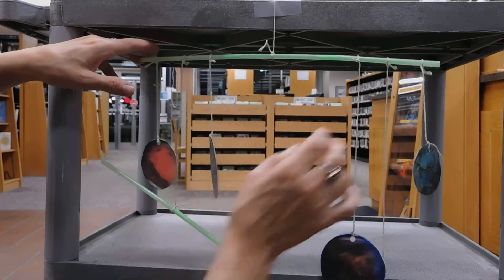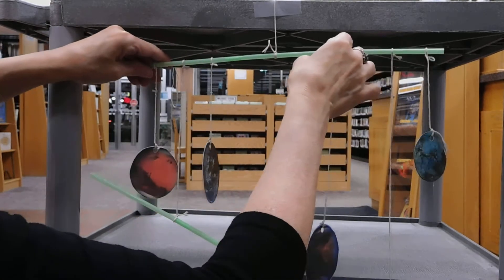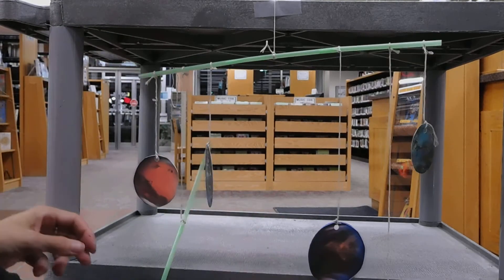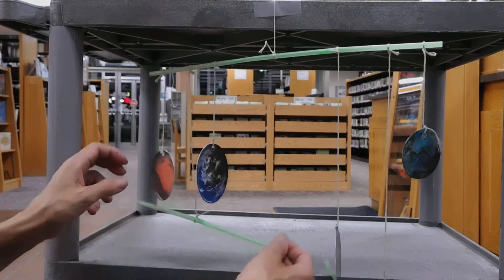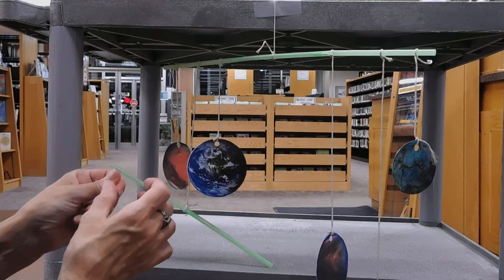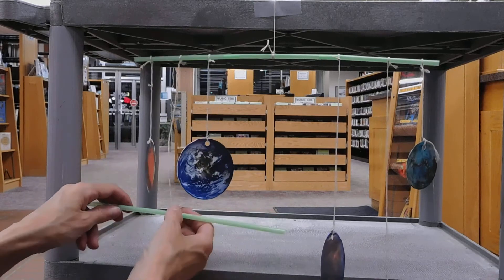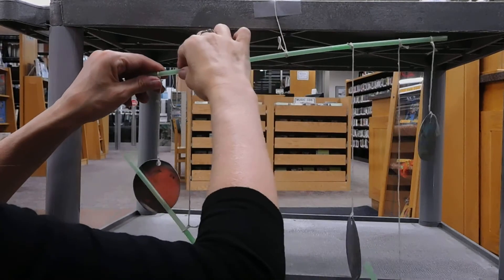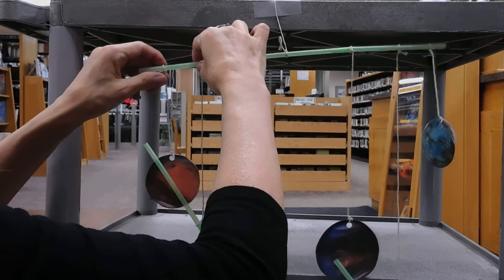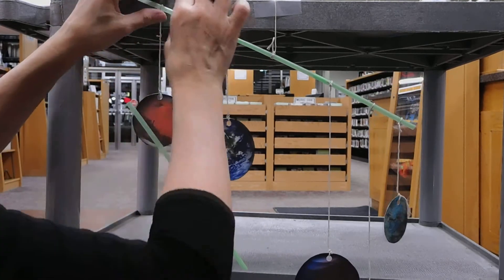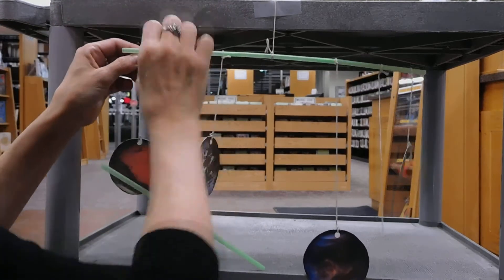Because with the mobile, you want your pieces to be able to freely move. So yep, Earth is going to be just good enough there to be able to freely move around. Actually, maybe we'll move Earth in a little bit. See, and I did that and it kind of threw all of my balance off.